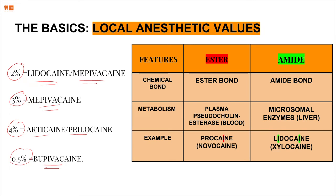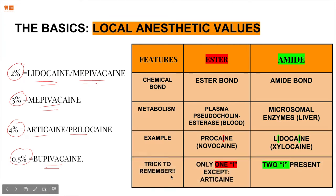An example of an ester is procaine, trade name Novocaine. An amide is lidocaine, trade name Xylocaine. A helpful trick: notice that ester names have only one 'i', while amide names have two 'i's. If a local anesthetic name has only one 'i', it's generally an ester — except articaine, which is the exception. Amides will have two 'i's. So remember: two 'i's = amide, one 'i' = ester.